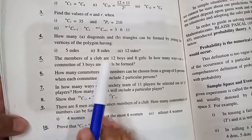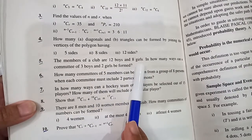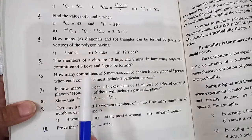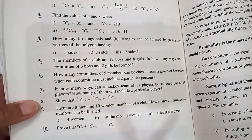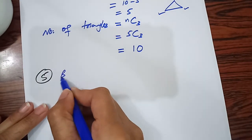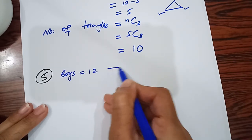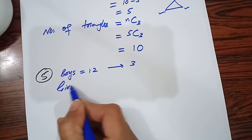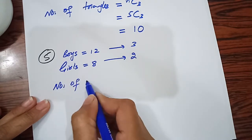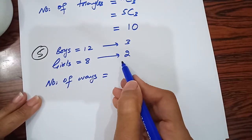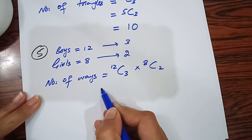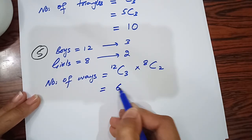Question number 5: The members of our club are 12 boys and 8 girls. In how many ways can a committee of 3 boys and 2 girls be formed? Number of ways = 12C3 multiply by 8C2 = 6160.